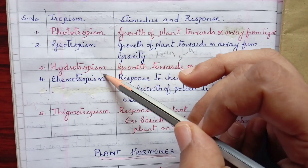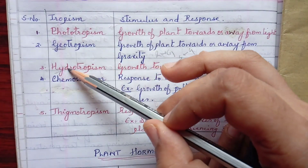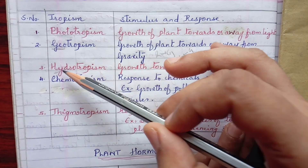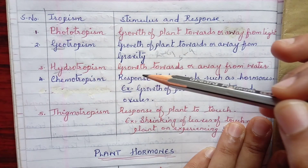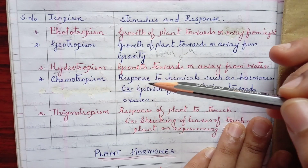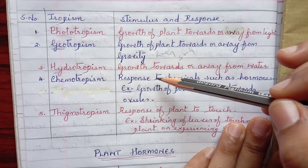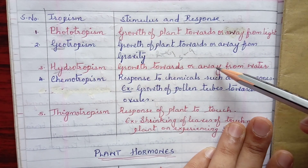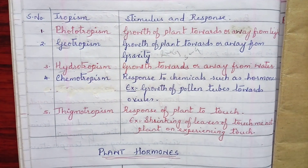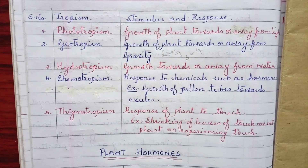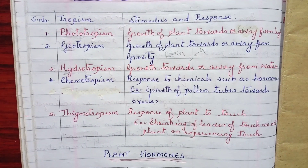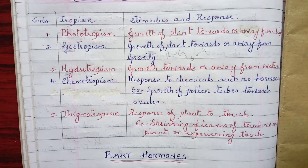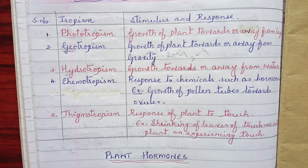Next is hydrotropism. 'Hydro' refers to water, so the plant or part of the plant is growing towards or away from water. Specifically, roots tend to grow towards the direction of water most of the time because their main aim is to absorb water.